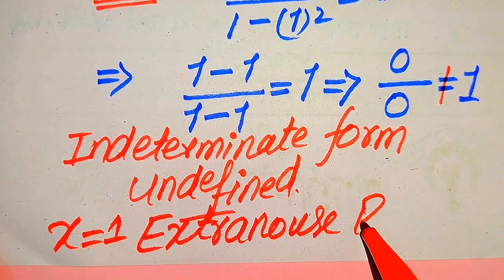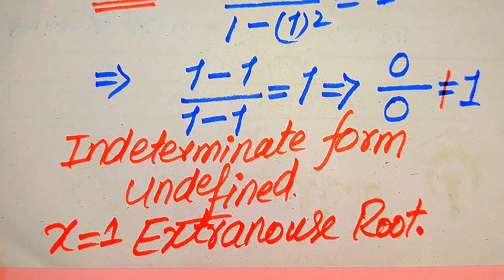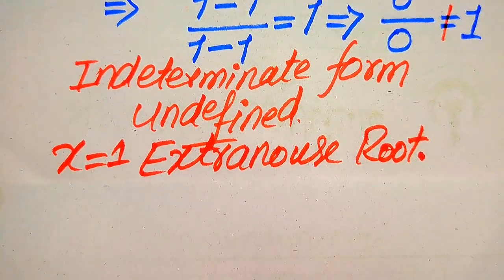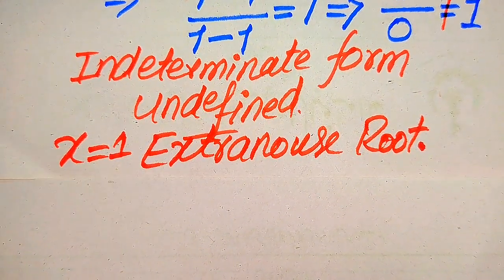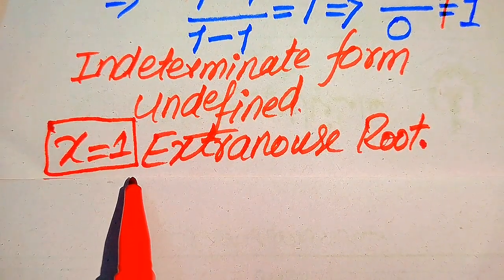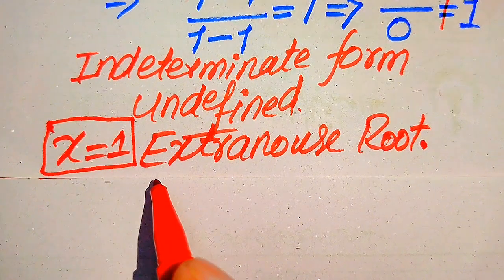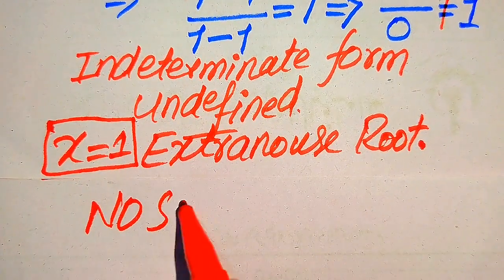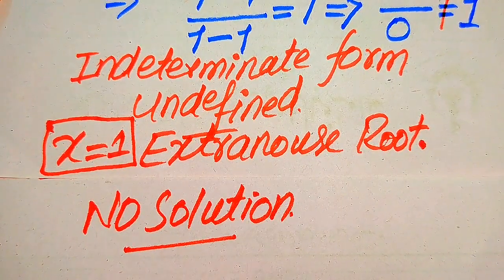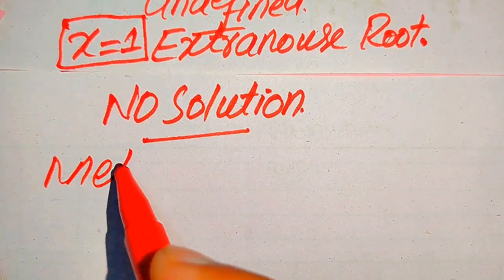The root which satisfies the given equation is called the solution of that equation, and the root which does not satisfy it is called the extraneous root. In this method, x equals 1 is an extraneous root because it does not satisfy the given equation. Therefore, the final conclusion of the first method is that the given equation has no solution — we cannot find any value of x that satisfies it.